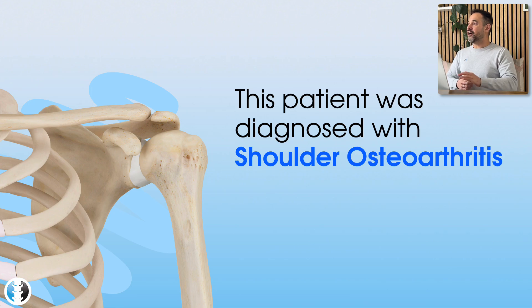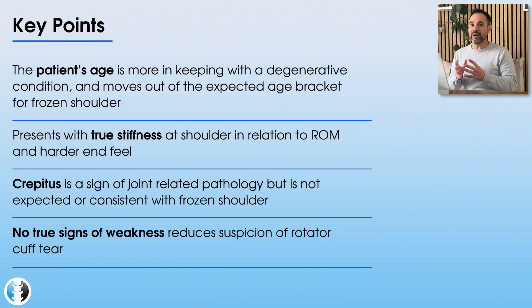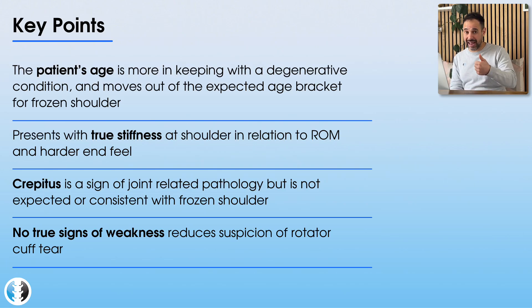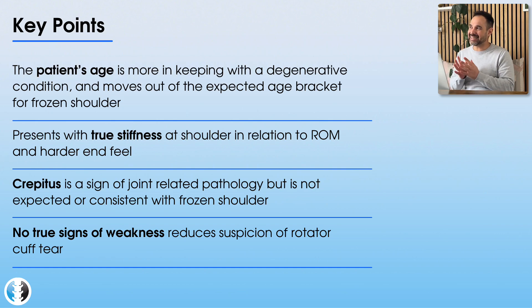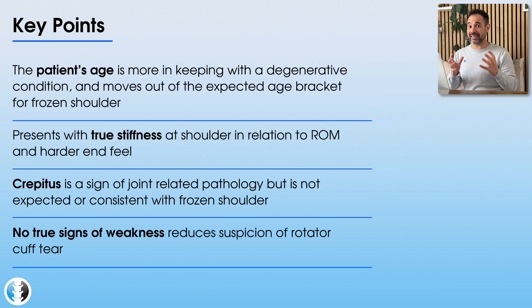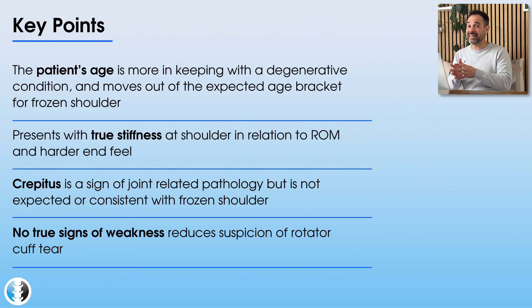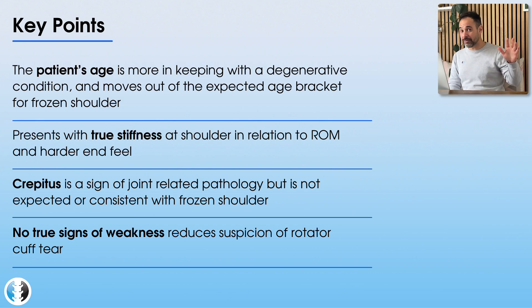Looking at frozen shoulder: patients do present with pain and stiffness. However, this patient is 68 years old, and his age is outside the bracket we normally expect. We specifically expect frozen shoulder to present between the ages of 40 and 60, with the most average age around 50. So at 68, from age alone, frozen shoulder is far less likely.